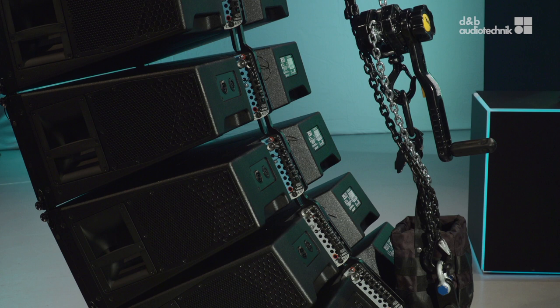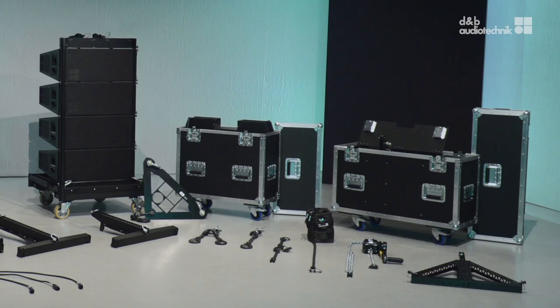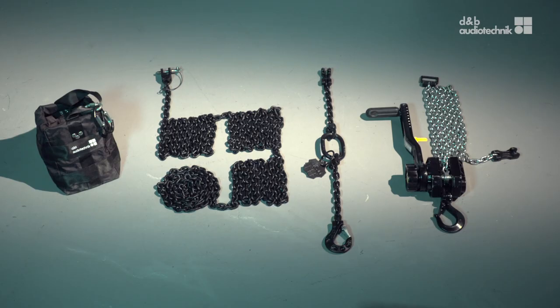XSL can also be mounted in compression rigging mode. This allows to rig the array straight and adjust the final curvature later. A dedicated compression set is necessary and contains the bottom compression frame, the compression chain with a grab link, the compression master link, a chain bag, and a manual crank lever hoist. How to make use of the compression set will be shown in detail in the respective chapters.